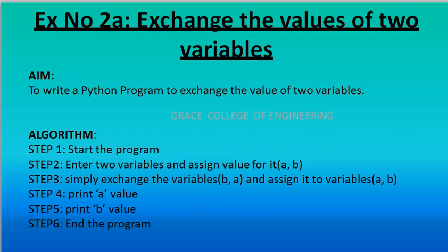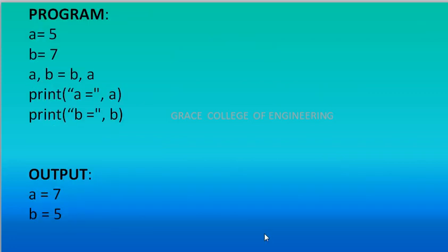Step 4: print A value. Step 5: print B value. Step 6: end the program. Program: A is equal to 5, B is equal to 7. A comma B equal to B comma A — directly we are swapping. Then print A is equal to comma A, and print B is equal to comma B. The output is: A is equal to 7, B is equal to 5.